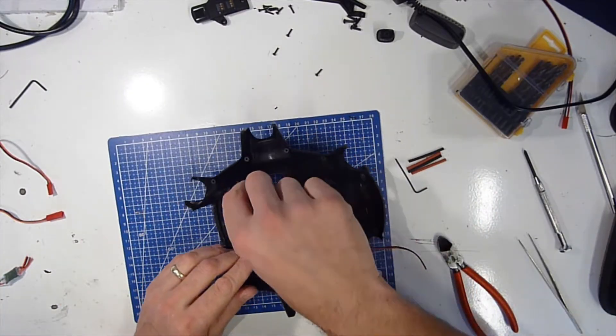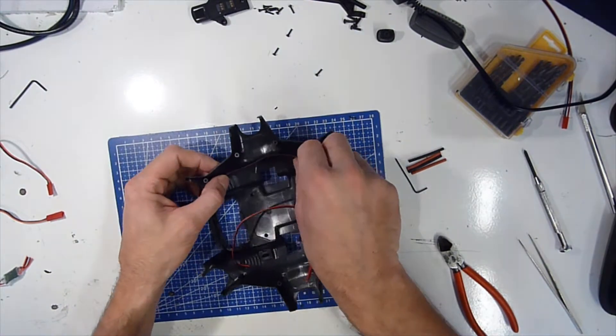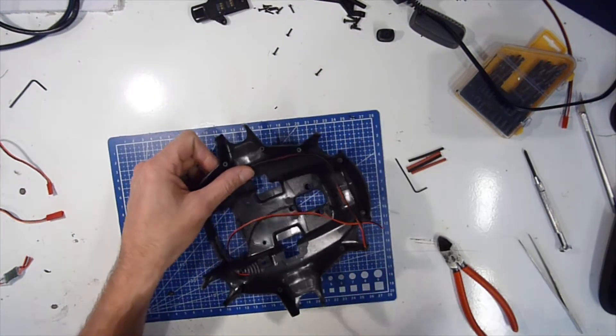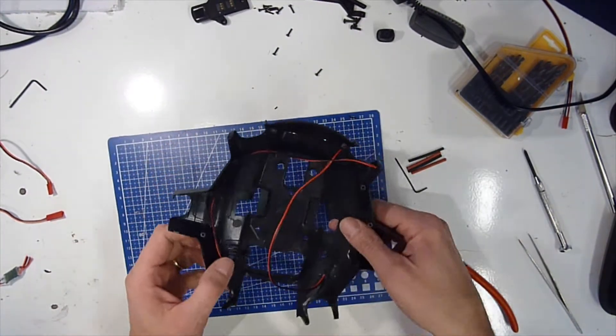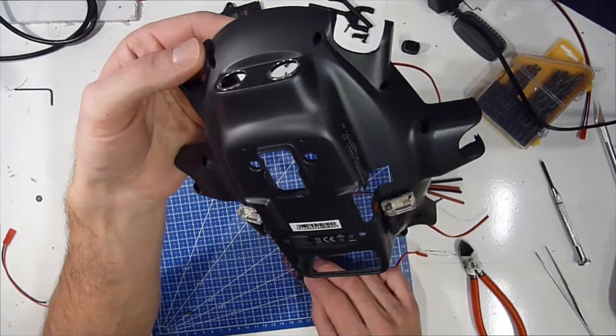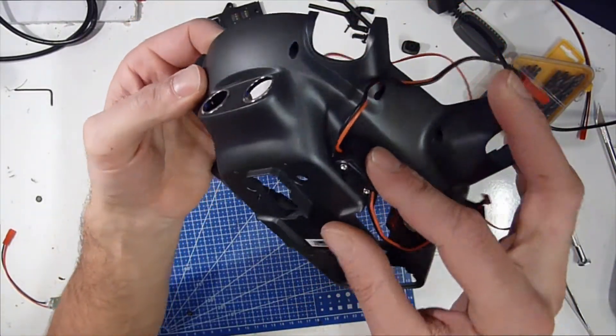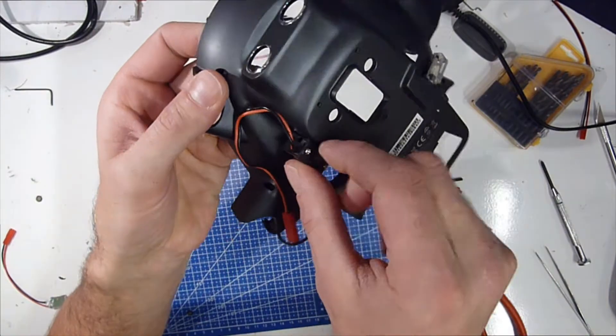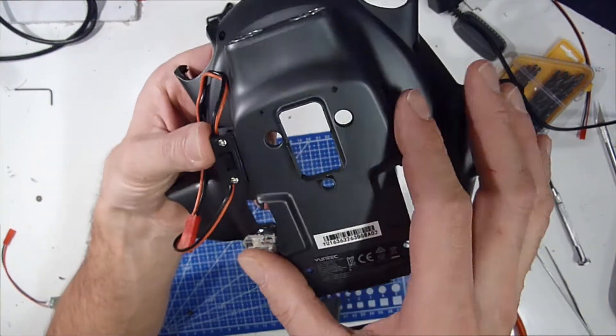Now we have to get these wires through the inside to end up where we want to put our switch. Let's just put it on the side here. This side, that should do the trick.